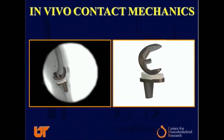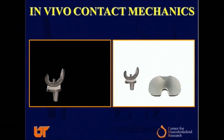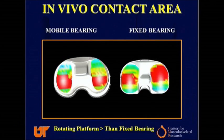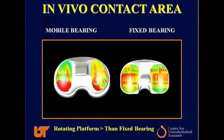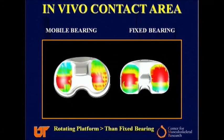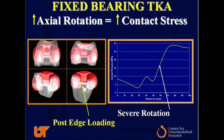We also looked at an in vivo contact mechanics analysis that allows us to get contact area and contact stresses for live subjects. Under in vivo conditions, the mobile bearing TKA actually gets a greater contact area than the fixed bearing TKA. And with contact stresses, the rotating platform TKA got significantly less contact stress on the medial condyle, whereas the fixed bearing TKA often went above the yield strength of the polyethylene.